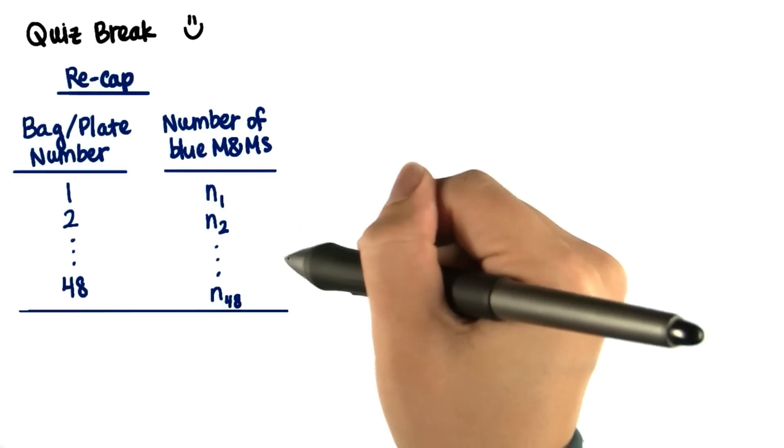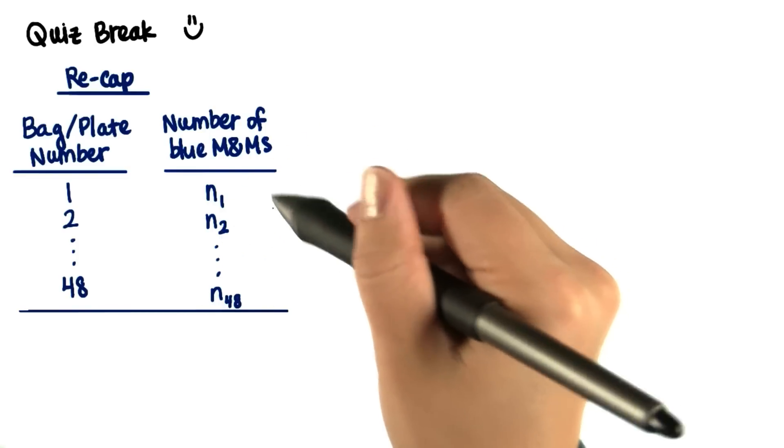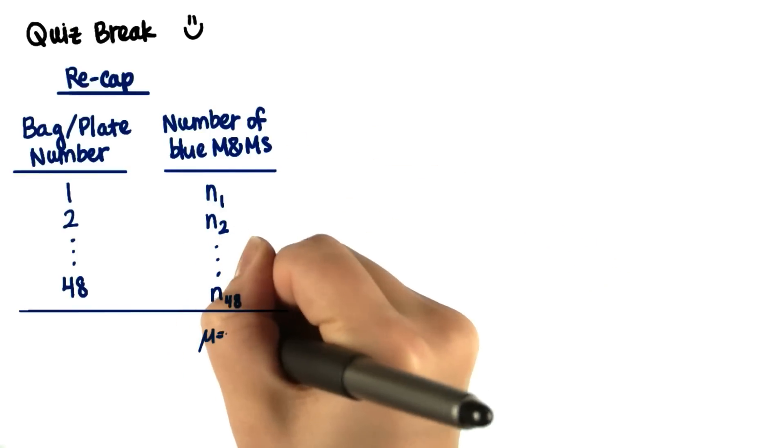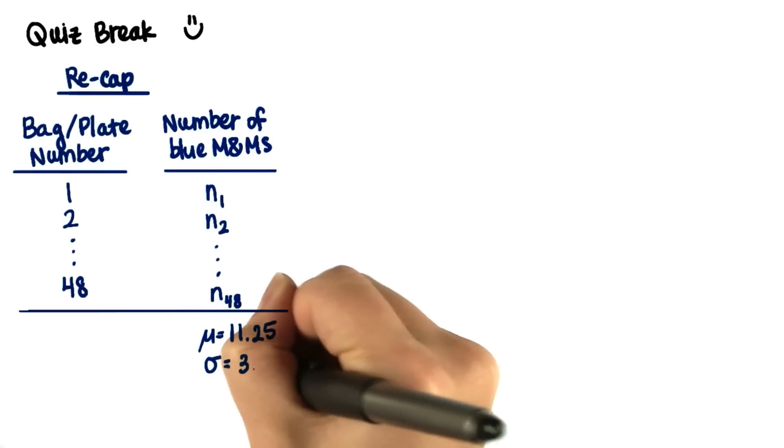So here's our population, the number of blue M&Ms on each plate. They found that the mean is 11.25 blue M&Ms, and the standard deviation is 3.49.